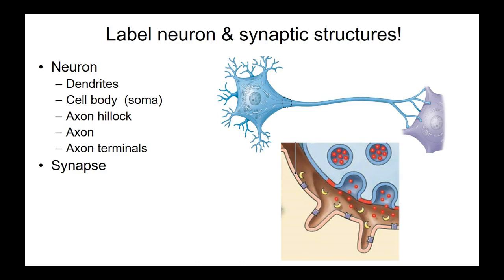The information continues on in the postsynaptic cell or neuron. Presynaptic neurons release neurotransmitters housed in vesicles that dock and release their neurotransmitter. For that postsynaptic cell to respond, it has to have a receptor for it — it's like trying to call somebody who doesn't have their phone. So it doesn't matter how much neurotransmitter gets released if that cell doesn't have a functional receptor for it.